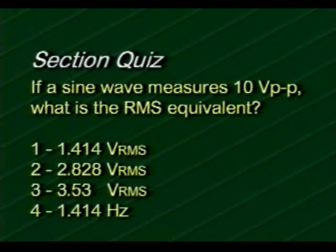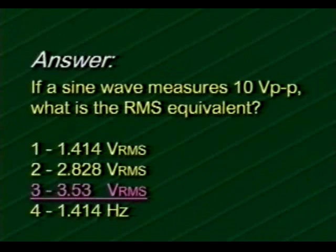Try this one. If a sine wave measures 10 volts peak-to-peak, what is the RMS equivalent? Your choices are 1.414 volts RMS, 2.828 volts RMS, 3.53 volts RMS, or 1.414 hertz. If you selected choice three, 3.53 volts RMS, you are correct.